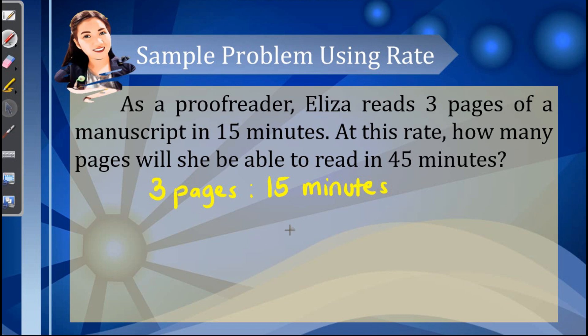Now we are looking for the number of pages that she can read for 45 minutes. From 15 going to 45, to know the number of pages that can be read for 45 minutes, we just have to multiply both sides, 3 and 15, by 3. So 3 times 15 gives us 45, and 3 times 3 gives us 9 pages.